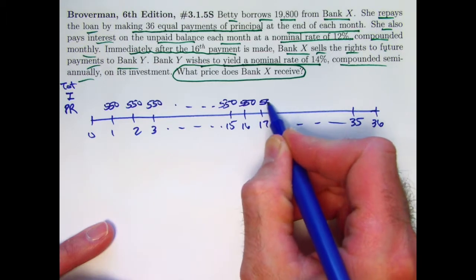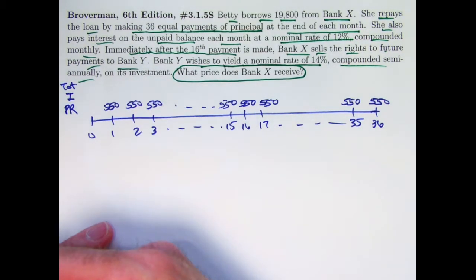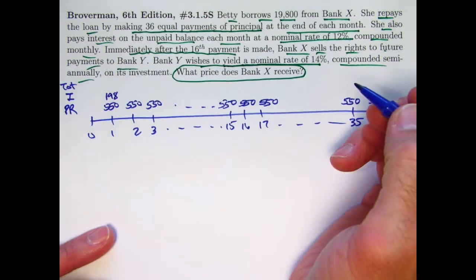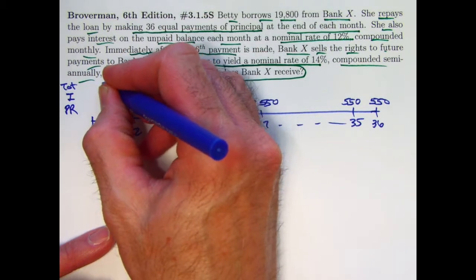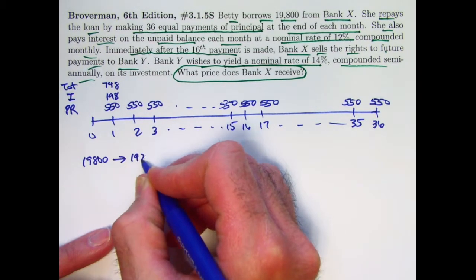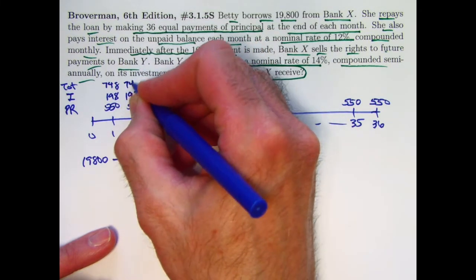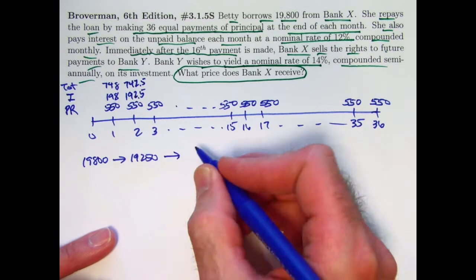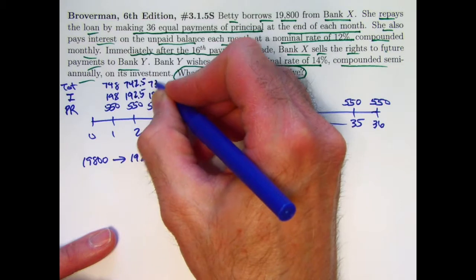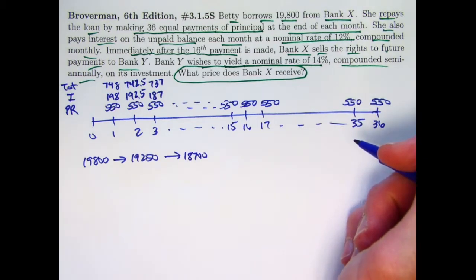It's the interest that's paid each month that will go down, therefore also making the total payment go down. It's 12% compounded monthly, so that's 1% per month. The initial loan amount is $19,800. 1% of that is $198. So the first interest payment is $198, making the total payment for that first month $748. So then the loan goes down from $19,800, the balance goes down to $19,250. 1% of that is $192.50, and the total payment for that second month is going to be $742.50. Then this goes down by another $550 to $18,700. 1% of that is $187. Total payment goes down to $737, etc. You can see the interest and total payments are going down by $5.50 each month. That's because $5.50 is 1% of $550.